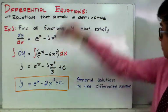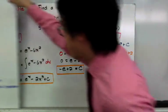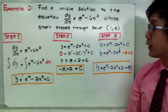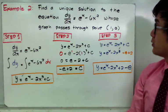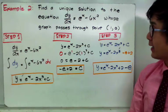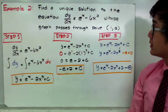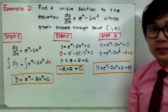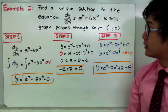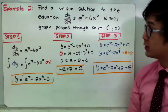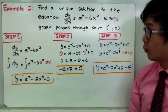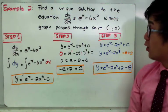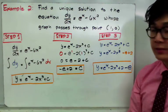Now let's have our second example. We're going to find a unique solution to the equation dy/dx = e^x minus 6x squared whose graph passes through the point (1, 0). This is the same differential equation from example 1, but now we require it to pass through the specific point (1, 0).